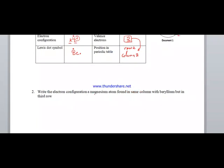Part 2: Write the electron configuration of magnesium (Mg). Magnesium is in the same column as Beryllium but in the third row. Row 3 means we have K, L, and M energy levels.